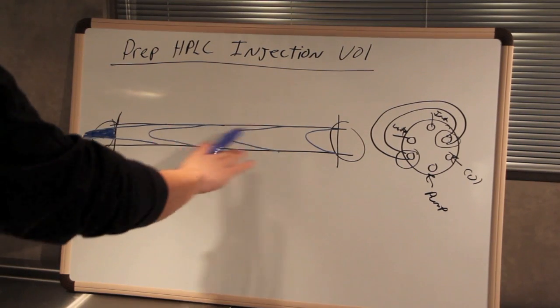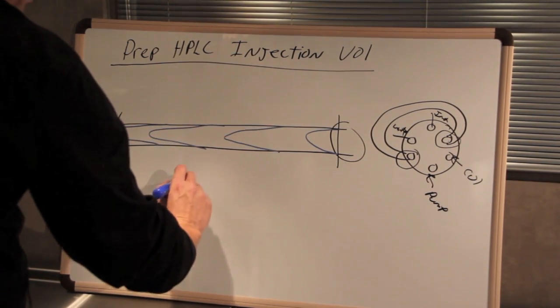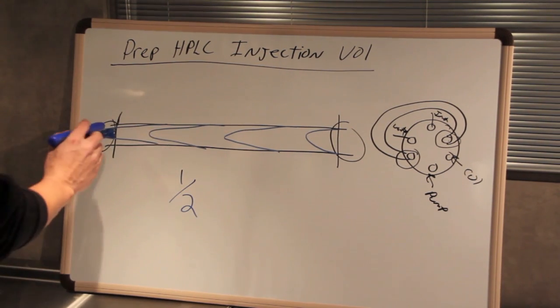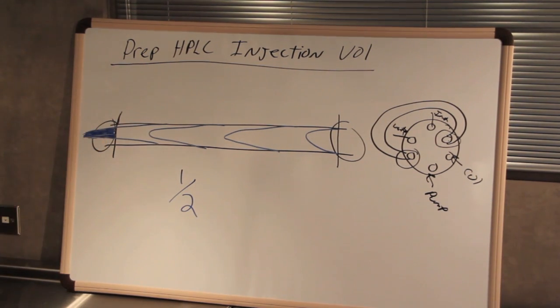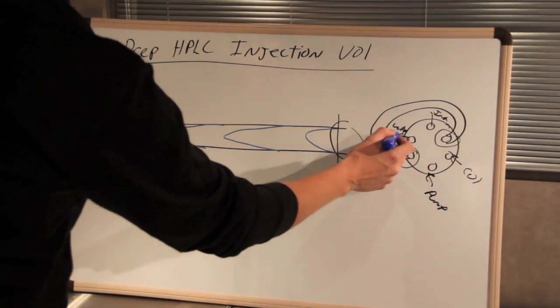Now this parabolic shape is so pronounced that if you inject more than one half of your sample loop, you're going to risk pushing sample out of the end of the injection loop and into your waste bottle.